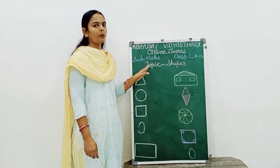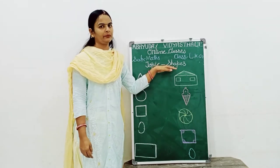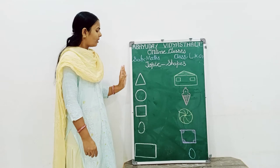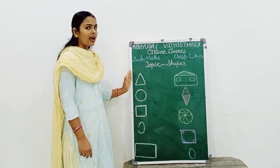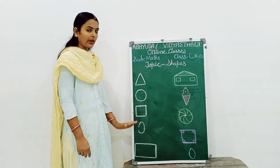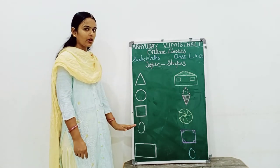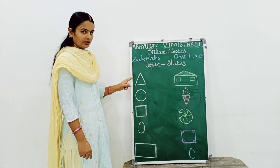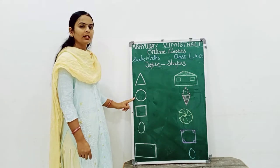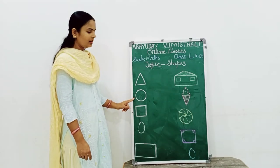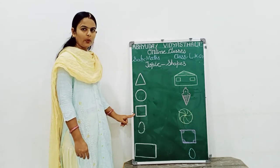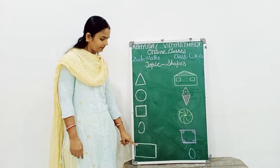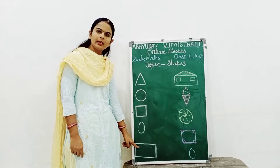Today's topic is Shapes. On one side I draw shapes. Shapes are triangle, circle, square, oval, rectangle.